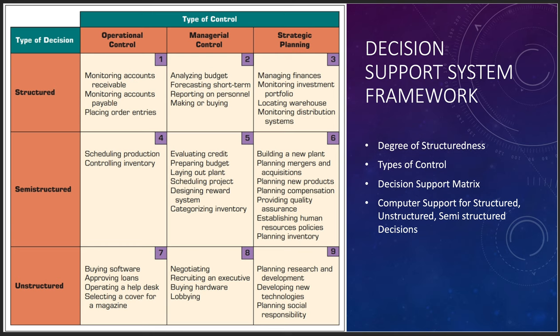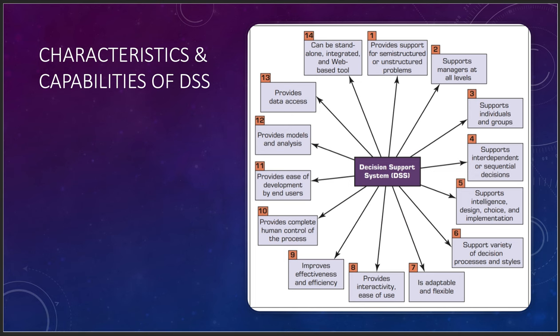Semi-structured decisions like scheduling production can be problematic — people go on vacation, get sick, production lines fail, parts go out, and controlling inventory is hard when you can't predict demand for a widget at a given location. Unstructured decisions include things like buying software as needed, approving loans, or operating a help desk — where Monday at 8 a.m. is always the busiest, and Friday at 1 p.m. is the second busiest.